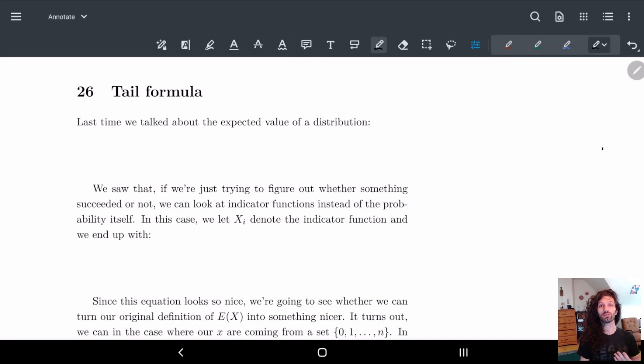In week five we talked about this thing called the expected value. We had the formula for expected value: E(X) is just the summation over all possible X's, and we do X times the probability that our random variable X is equal to this little x.